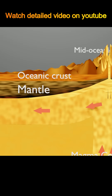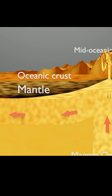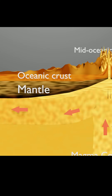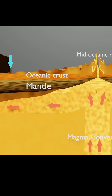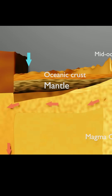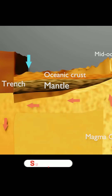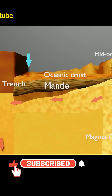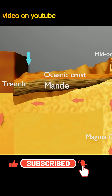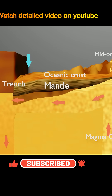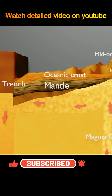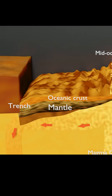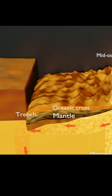During this process, the height of the structures is reduced to form guyots and seamounts. At the boundary of the seafloor, because of cooling down, the seafloor becomes very dense and its weight increases. Therefore, they start to subduct within the asthenosphere, forming trenches.